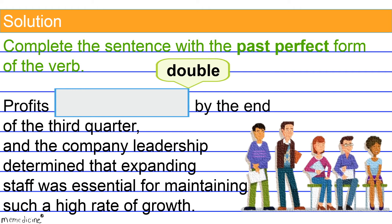Back to the original question. The past perfect tense describes a completed action that had happened before something else. Keep in mind that the 'something else' also took place in the past. To form the past perfect tense, use the past tense form of the helping verb 'to have,' which is 'had' (H-A-D), combined with the past participle of the main verb. According to this rule, 'had doubled' is the past perfect tense form of our main verb 'double,' because 'double' is regular — its past participle 'doubled' is the same as its simple past tense form 'doubled.'